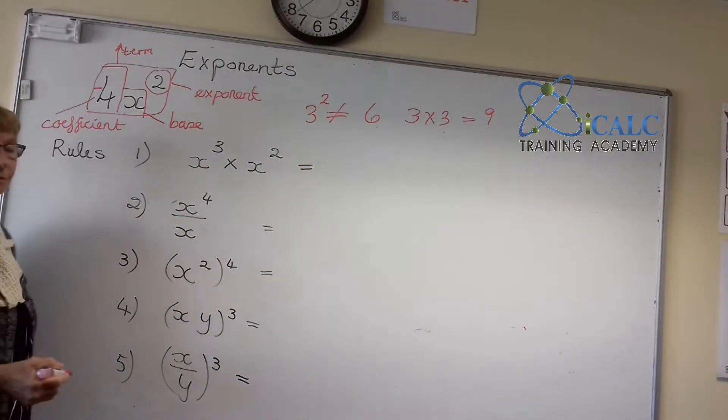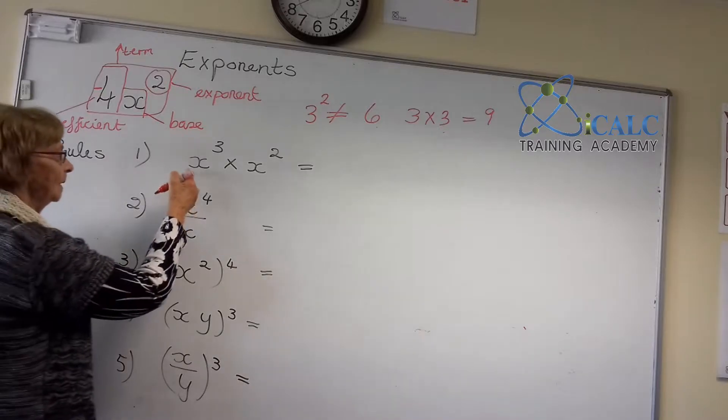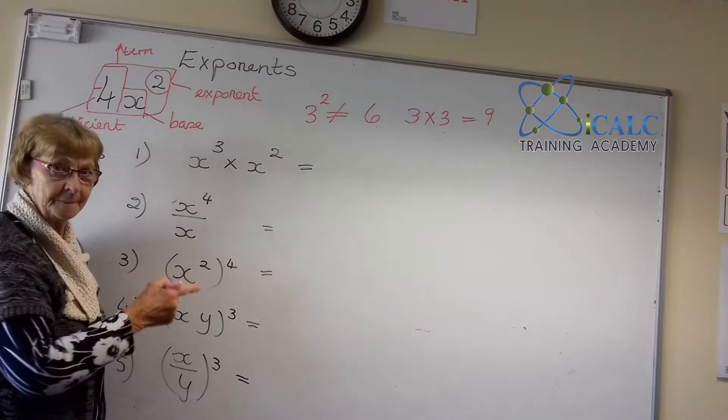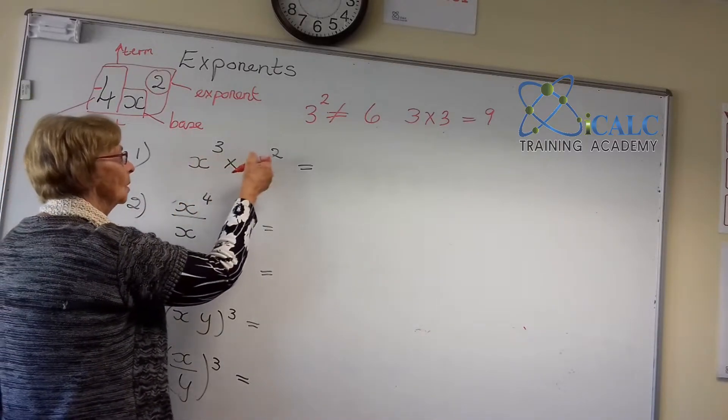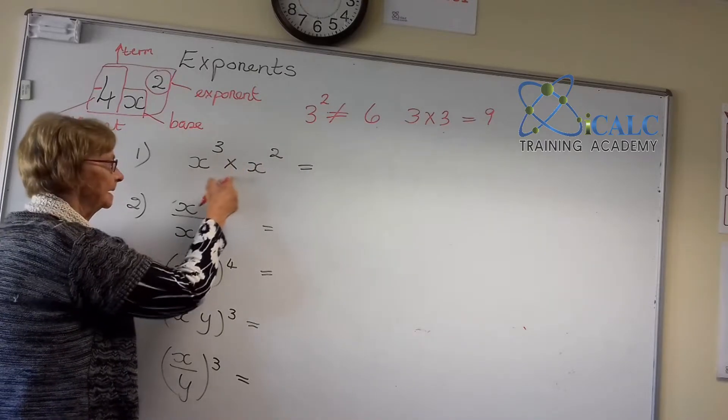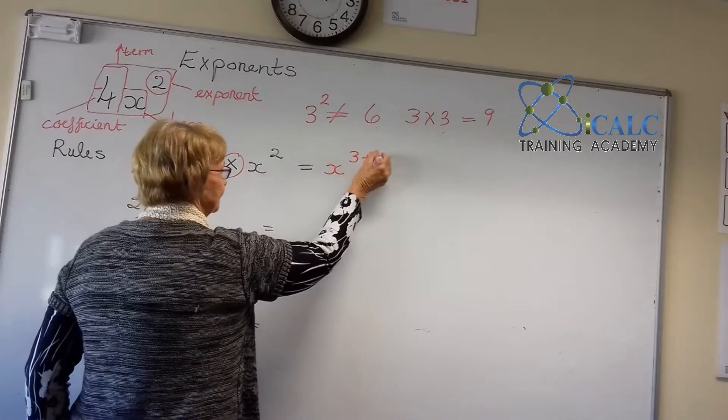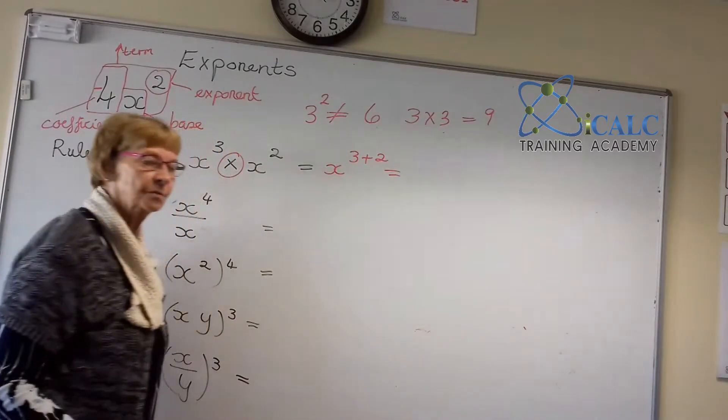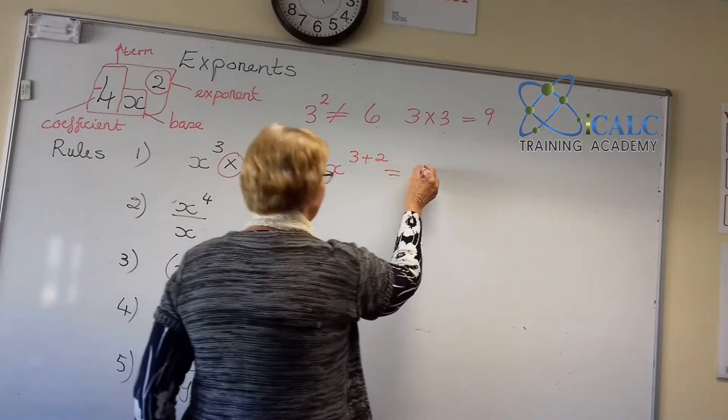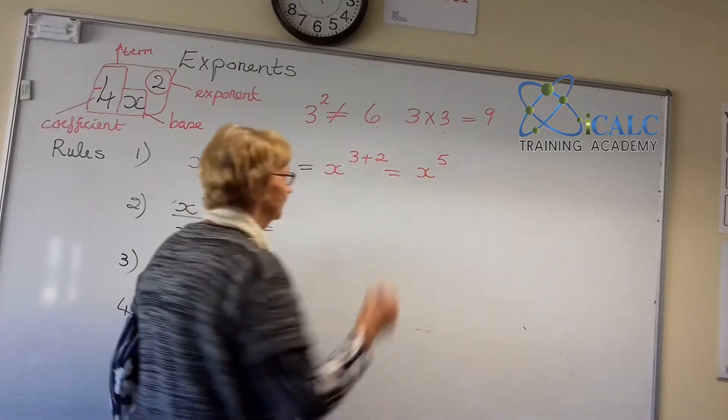Now let's get back to some of the rules. Remembering that if we have bases that are the same, only the bases are the same, when we have a multiplication, then we are going to add the indices. So this will become 3 plus 2, which will give us x to the power of 5.